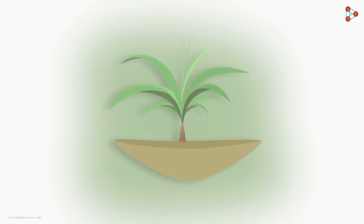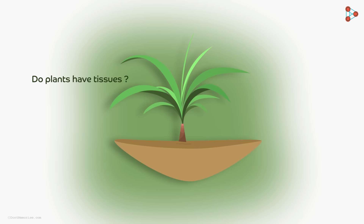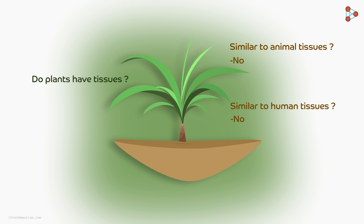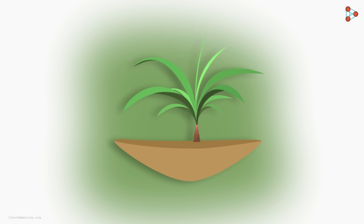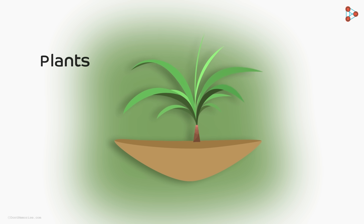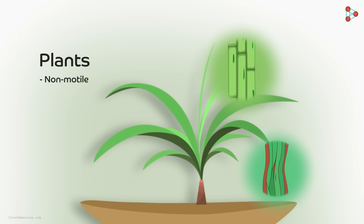Let us look at plants now. Do you think plants have tissues too? Are the tissues of plants and animals similar? Logically, they do not have the same tissues as humans do, but they do have tissues. Plants are stationary and their movement is restricted.